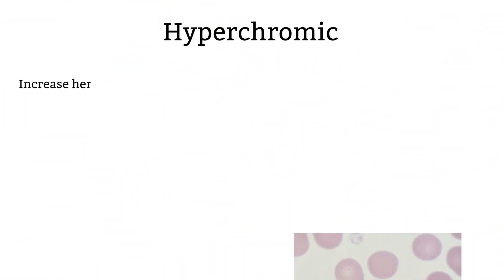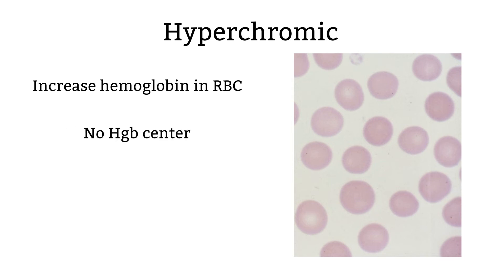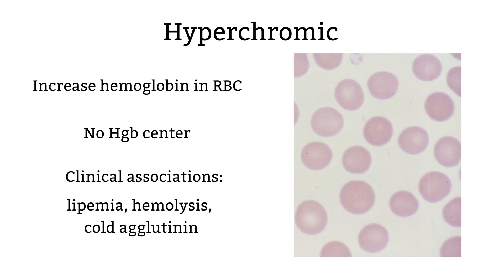Hyperchromic is a term used to describe small to no pale center in the red blood cells — the opposite of hypochromic. The red blood cells in this category have no pale centers, and there are some illnesses that associate with this condition. The MCHC would be elevated, though it could be a false reading by the instrument.